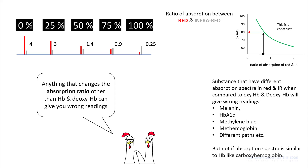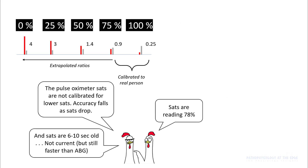Anything that changes the absorption ratio other than hemoglobin and deoxyhemoglobin can give you wrong readings. There are substances that have different absorption spectra in red and infrared, and those include melanin, A1C, methylene blue, methemoglobin, etc. Another important thing to remember is that pulse oximeters are not calibrated for lower SaO2 values — they have been calibrated in real persons only between 75 to 100%. Below 75%, these are extrapolated ratios.